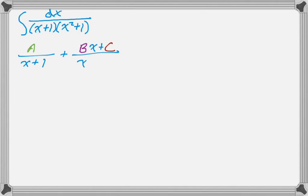and then Bx plus C over x squared plus 1. So what you want to do is you want to put a polynomial that is one degree lower than the polynomial in the denominator. So the polynomial in the denominator is quadratic, so we need a generic linear equation above it, so that's Bx plus C.